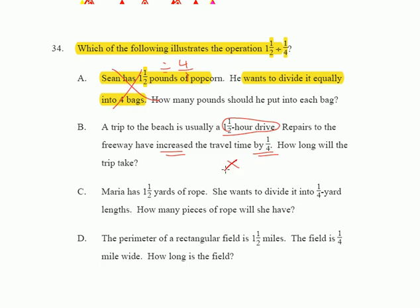Option C: Maria has one and one-half yards of rope and she wants to divide it into one-quarter yard lengths. That looks like the most appropriate fit for our mathematical model, so the answer is C.